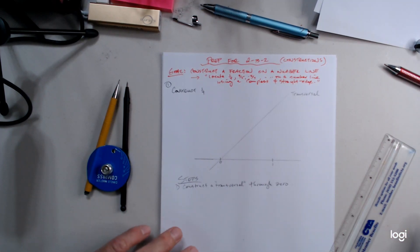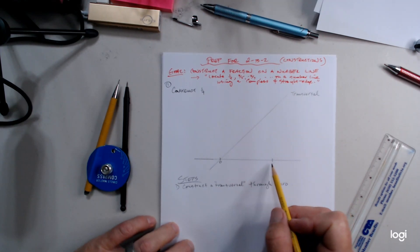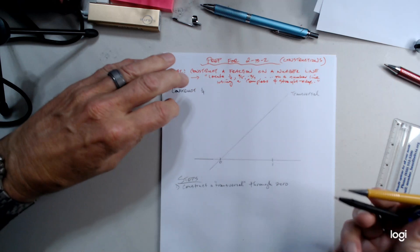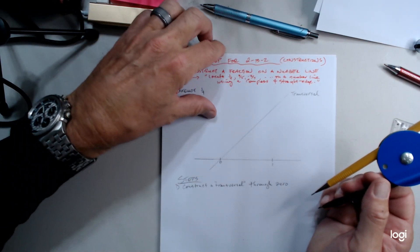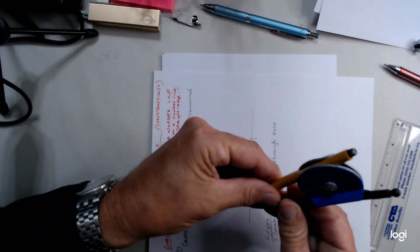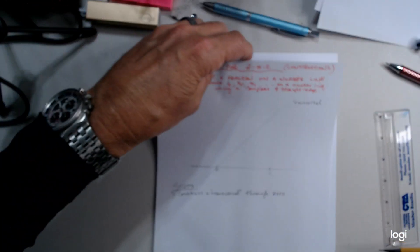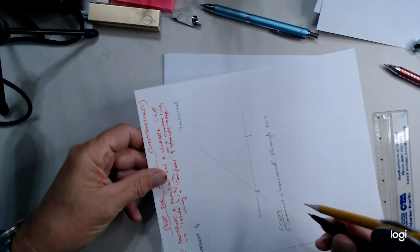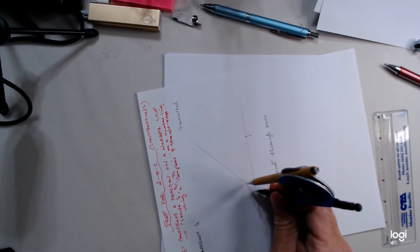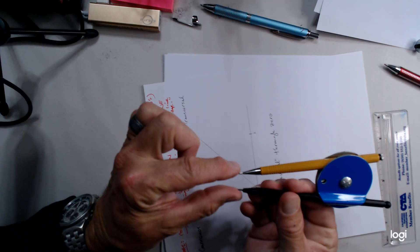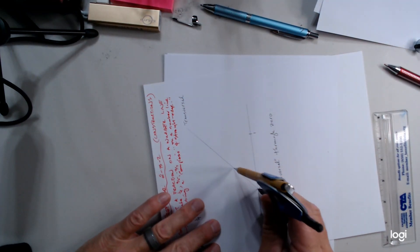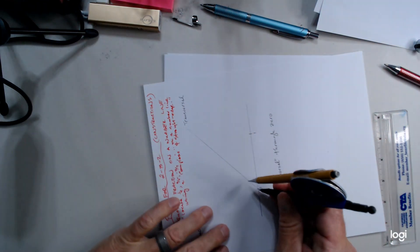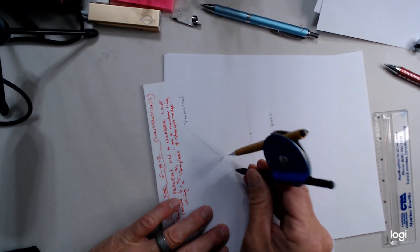Now we're constructing 1/4, and we want to divide the unit segment from 0 to 1 into 4 equal parts. To do that, take your compass first. Since I'm right-handed, I'm going to rotate the paper and construct 4 congruent segments on the transversal. The radius you choose — the distance between the pointer and the pencil — is called the radius of the compass. It doesn't matter what radius, but if it's too big, you can't fit 4 segments, so decrease it a little. Then count to 4: 1, 2, 3, and 4.